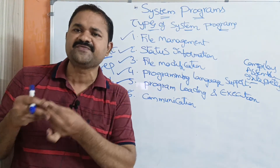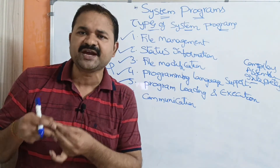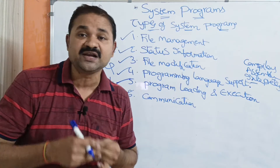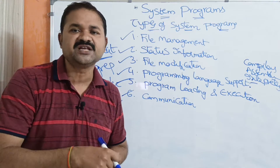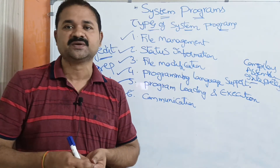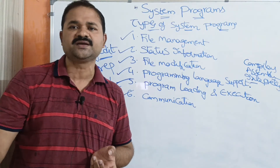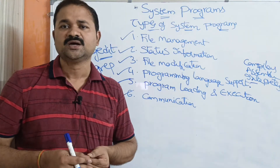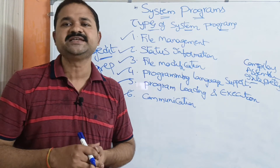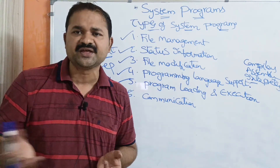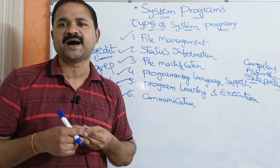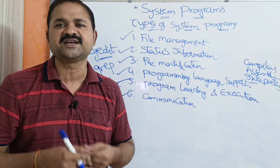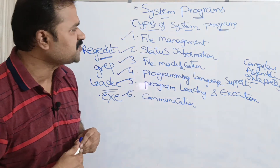The sixth type is communication system programs. A process can communicate with another process, a user can communicate with another user, and a system can communicate with another system. For this, a virtual connection needs to be established between the source and destination — person to person, process to process, or system to system. One process can communicate with another via email, or using FTP protocol to transfer files from one user to another, or by remote login using Telnet to send messages to another user. These are the various types of system programs.